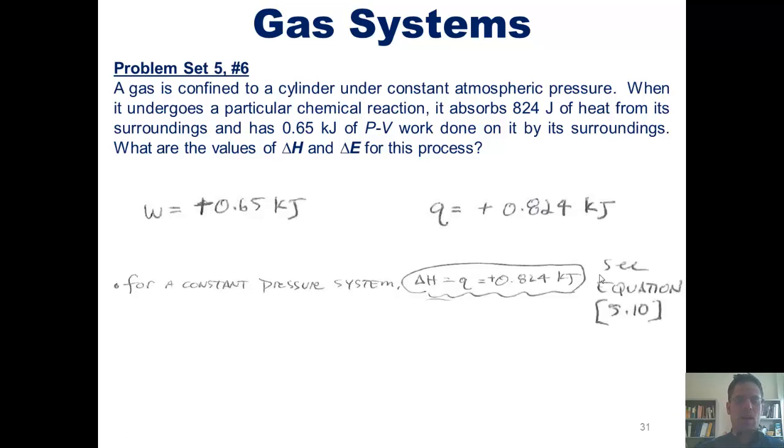Thus, we've now answered that question. But what about delta E? Well, we remember that delta E equals Q plus W. We throw in these numbers for those two values, and we end up discovering that delta E equals 1.47 kilojoules.